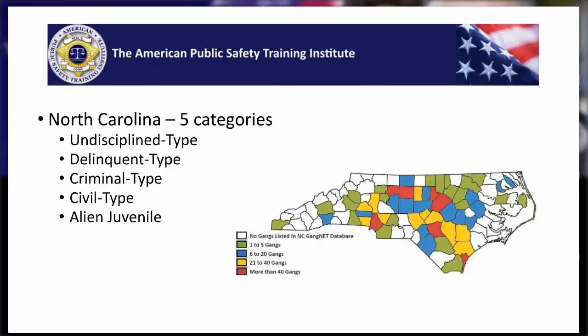They have an undisciplined type status, which is a juvenile who committed an undisciplined type of status offense — let's say they're a runaway, or they're truant, or they're just a disobedient child who is picked up for it.